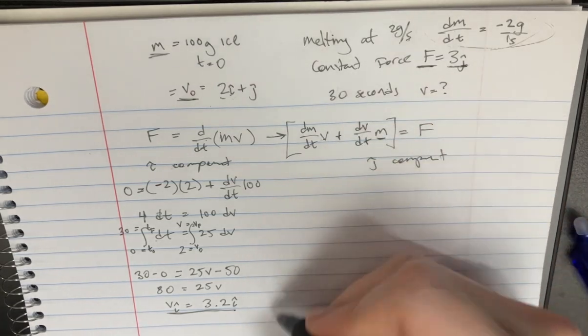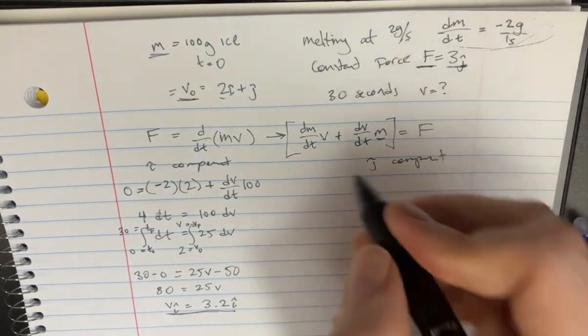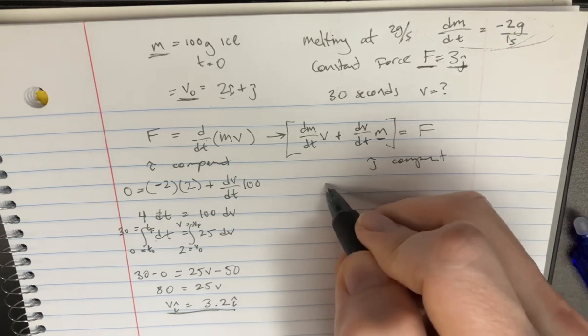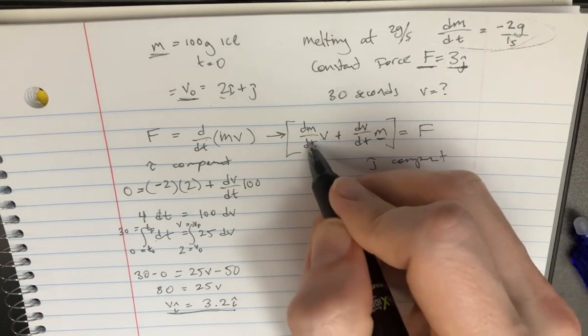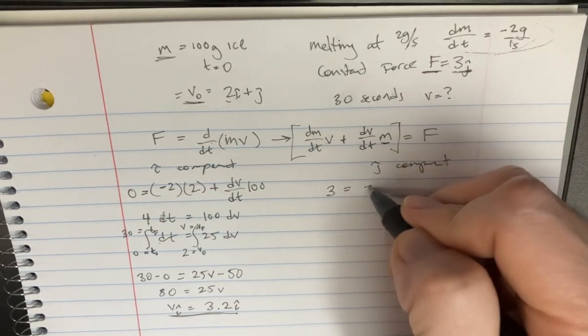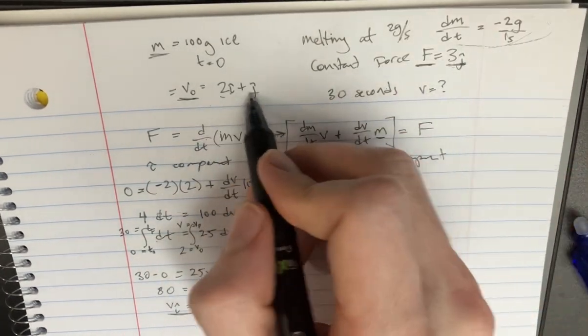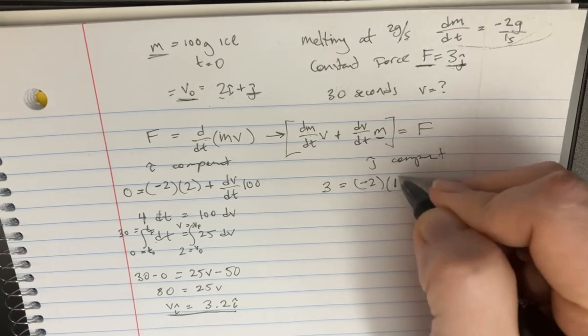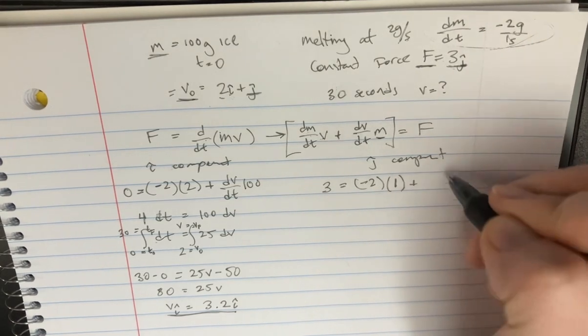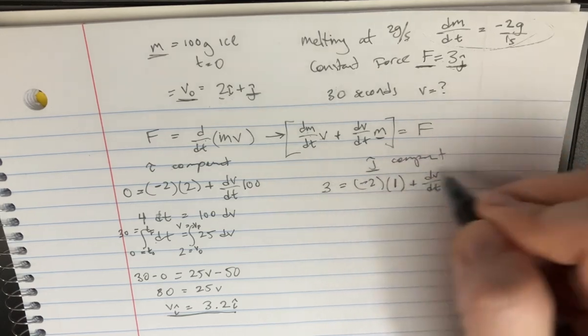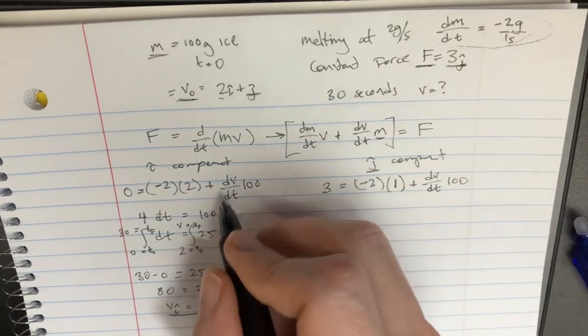Cool. So let's try to figure out the same thing in the j component side. We know that fj is supposed to be 3. And that's going to be equal to dm over dt. So it's, again, a negative 2 here times the velocity. And the velocity is only 1 in the j direction in the beginning. And then we can say plus dv over dt. Again, this is for j component. And then times 100.